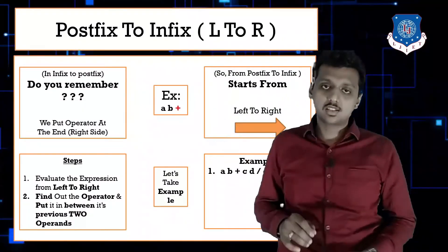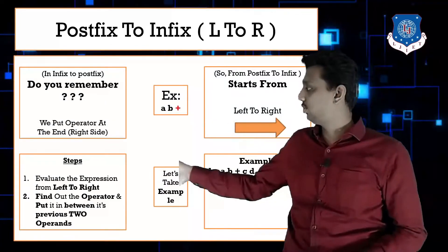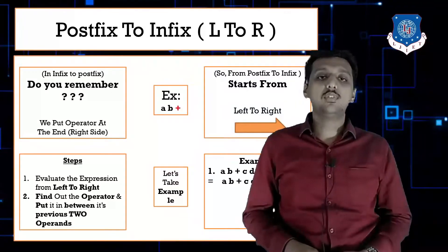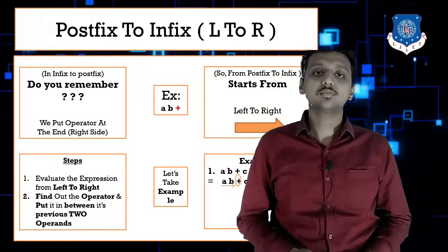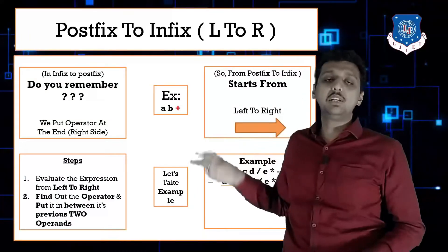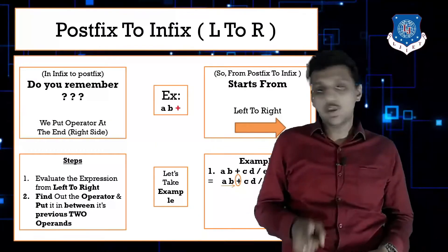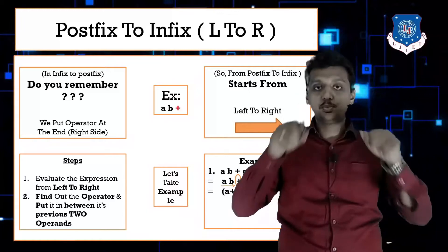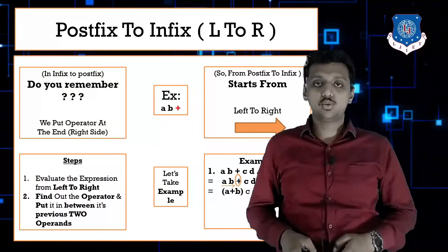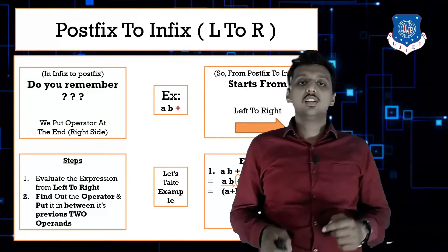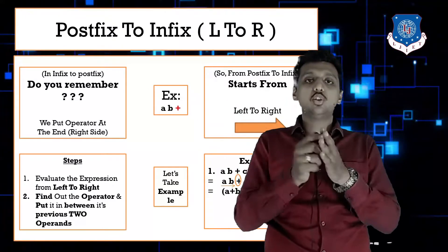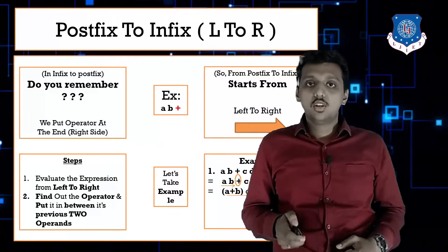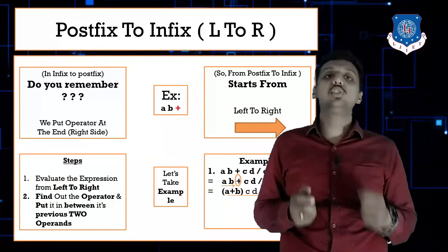Starting from left to right on the expression ab+cd/e*-, the first operator found is '+'. Take the plus and put it between its previous two operands, a and b, giving (a+b). This term is now evaluated — put brackets around it and remove them after evaluation. Continuing left to right, 'a+b' is already evaluated, and next we find the division operator.